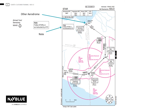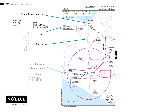Any restrictions and notes valid for the whole procedure shall be gathered together as far as possible in the upper area of the chart. The FIR boundary is shown with the four-letter ICAO codes. Coordinates for each waypoint will be present on STAR charts.